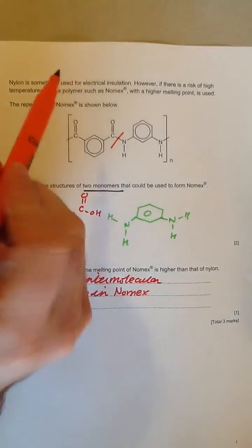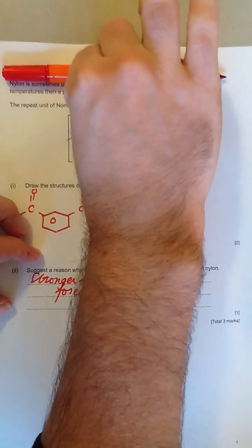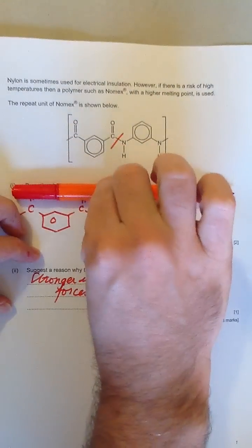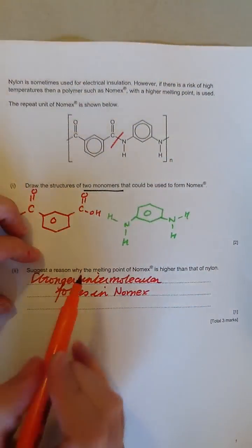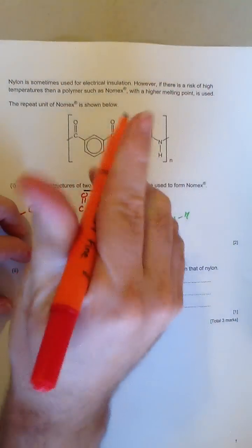And remember, that means it's bonds between polymer chains. It's that polymer chain, and another polymer chain there, and maybe another polymer chain there. The melting and boiling points involve the intermolecular forces between these chains.